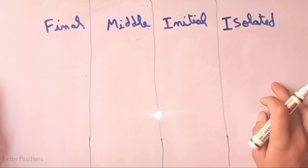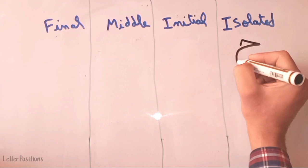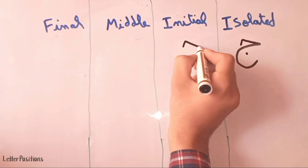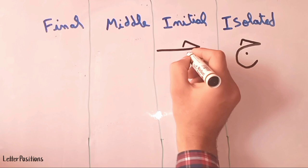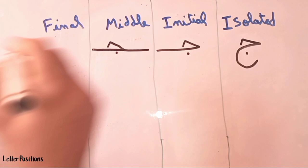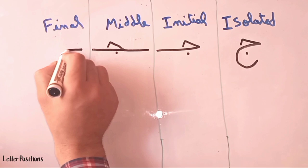Now let's move to the next letter, harfu al-jim. This is the isolated form of the letter al-jim. In the initial form, we start from here, go straight, and put a dot underneath the letter. In the middle form, a straight line, we trace the shape of al-jim, and put a dot underneath the letter.